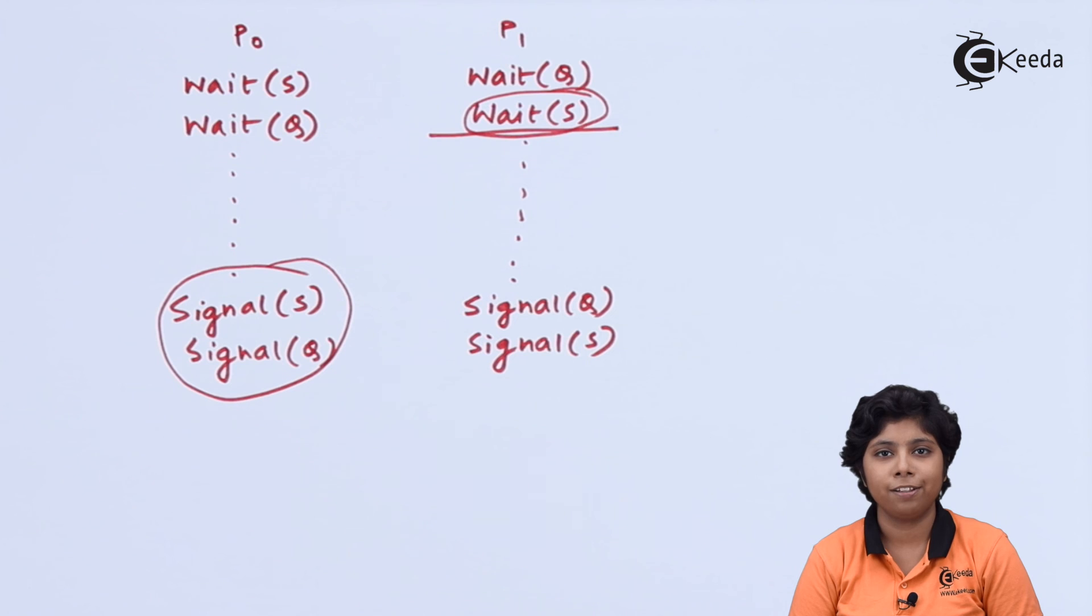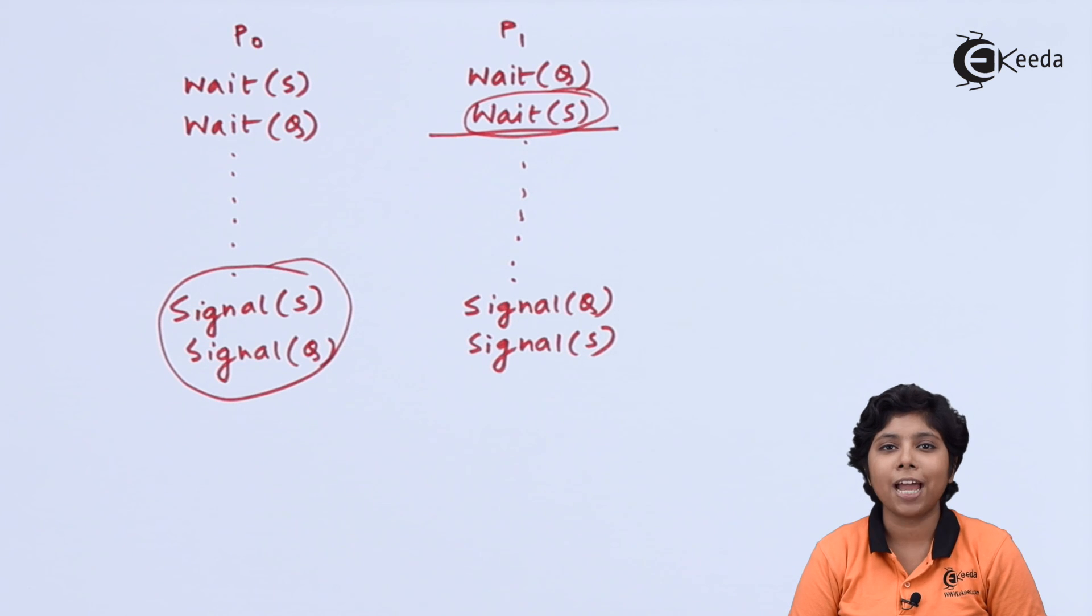So these are the issues of deadlock, starvation, and priority inversion associated with semaphore. Thank you for watching this video. Stay tuned with iKeeda and subscribe to iKeeda.